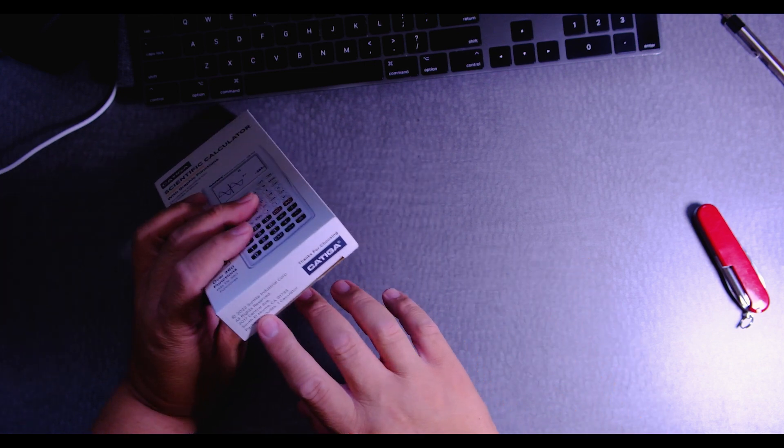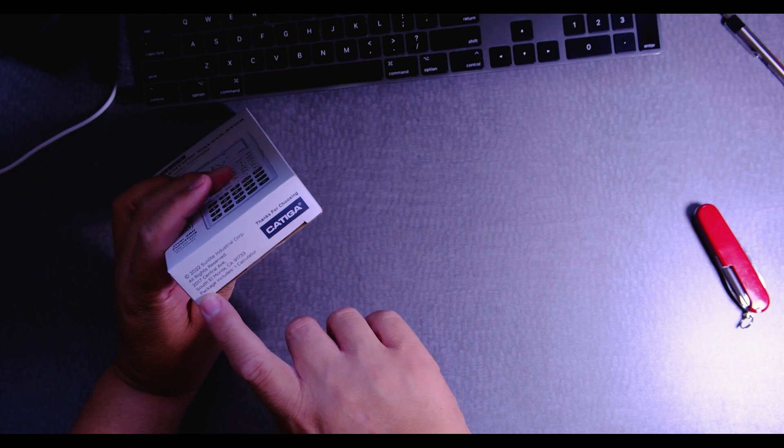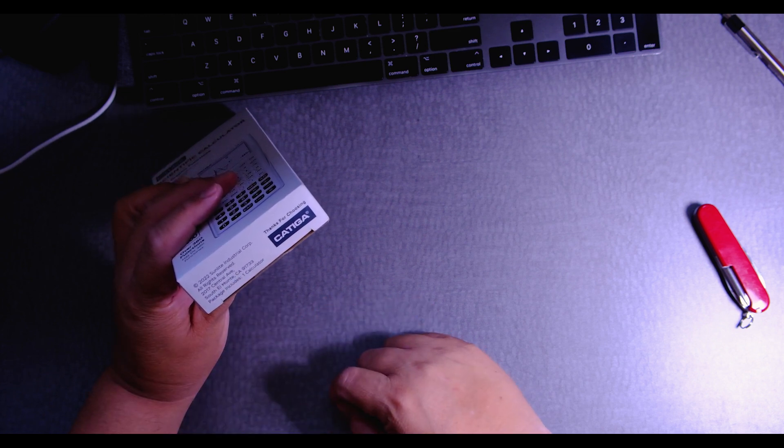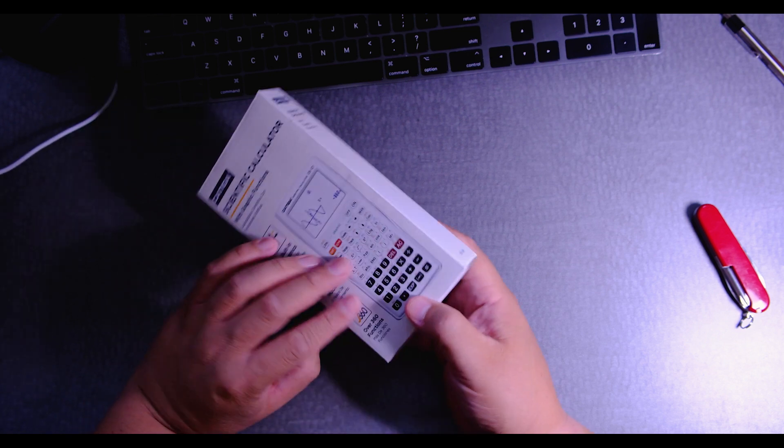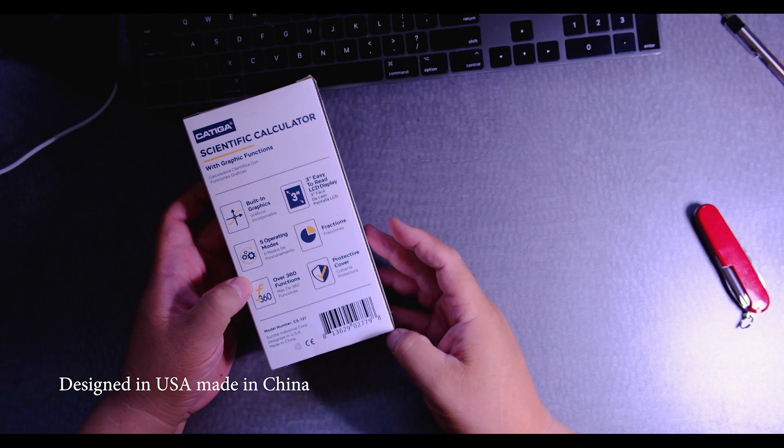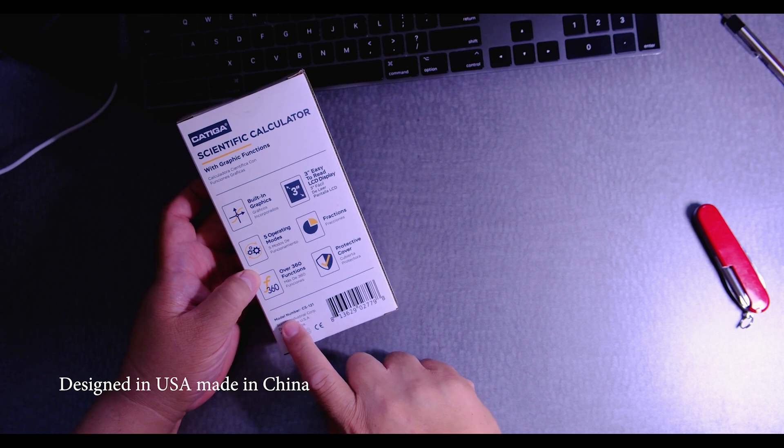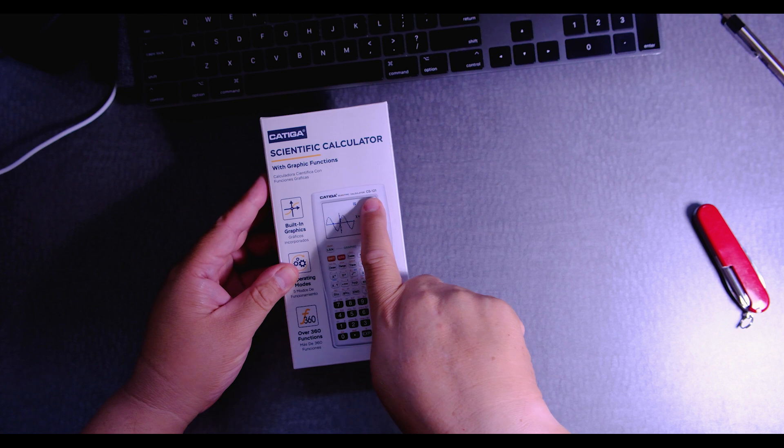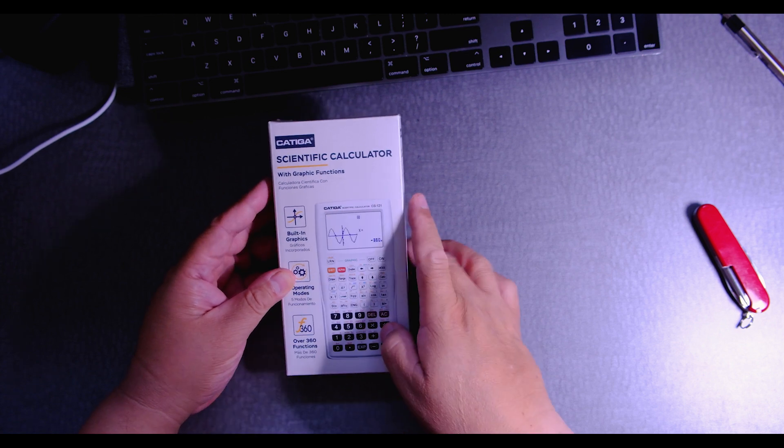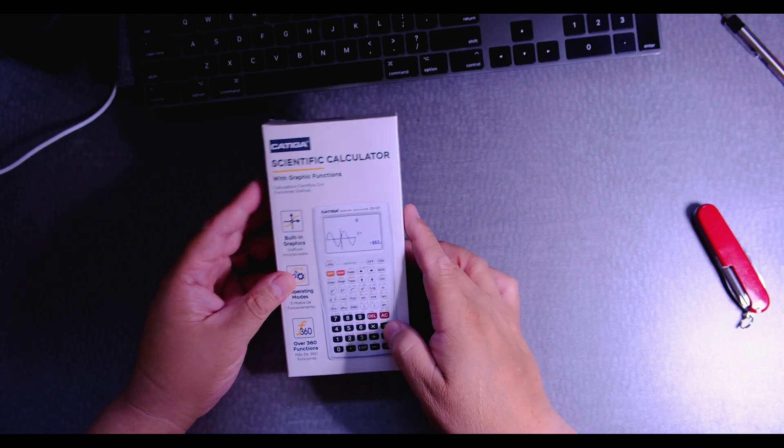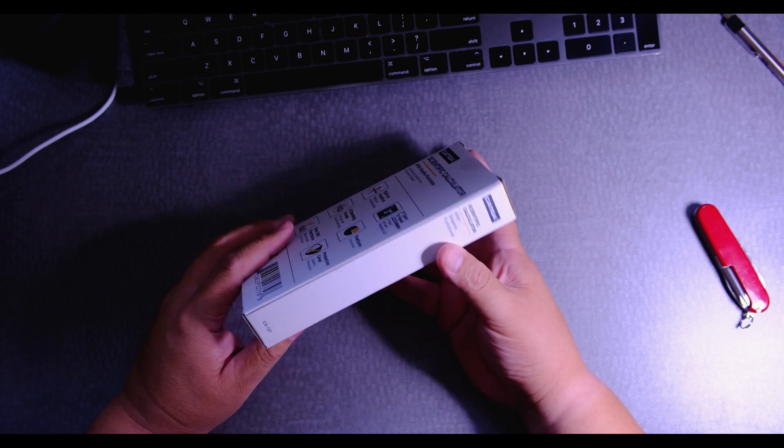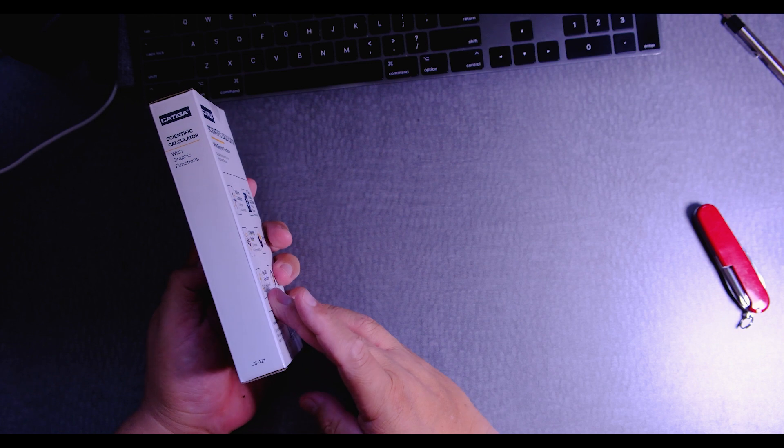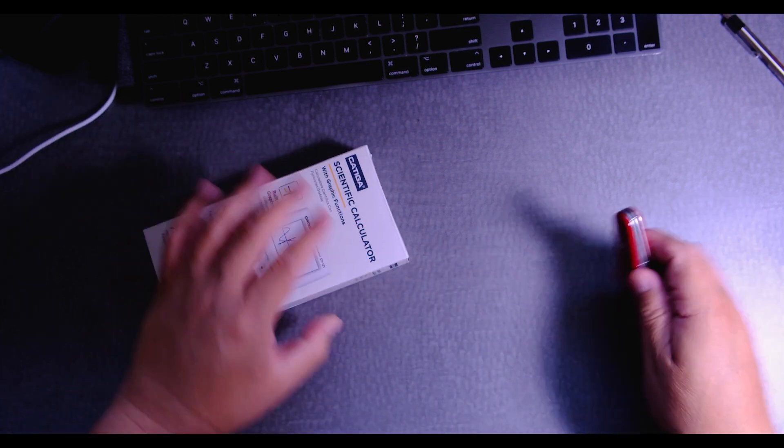Over here there's an address for South Almonte, California. This is model CS-121. It doesn't say here. Oh yeah, it's right there. CS-121. Where is it made? I don't know.